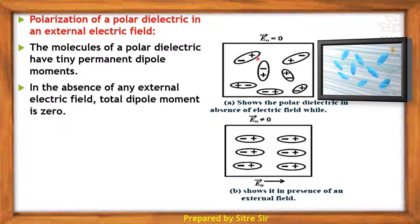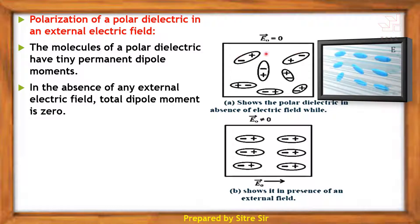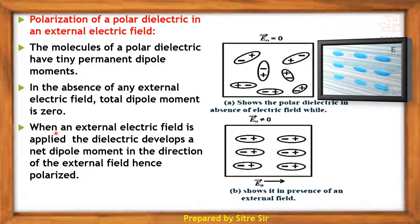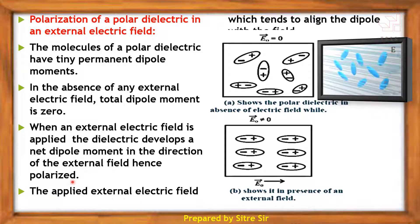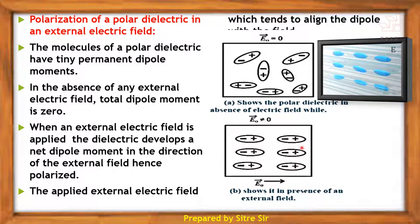In the absence of an external electric field, the total dipole moment is zero — the individual molecules have dipole moments but as a whole, the substance does not show a net dipole moment. When an external field is applied, the dielectric develops a net dipole moment in the direction of the external field, hence it becomes polarized. The randomly oriented dipole moments align along the direction of the applied field.